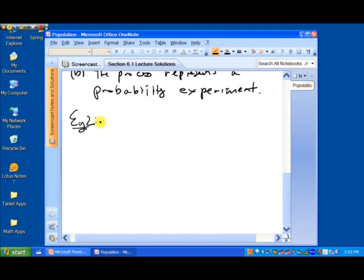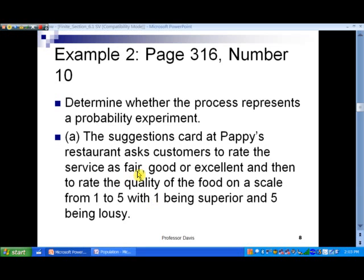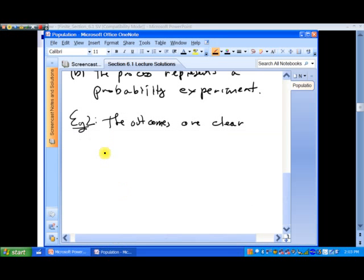Now, so for example 2, let's see. The outcomes are clear. And they were to rate the service. Let's just look at that again. As fair, good, or excellent. Fair, good, or excellent. So, when you look at the data that would come out of this experiment, notice here it would be one of these three words, which is a form of data that we can talk about later. It's called nominal level data.